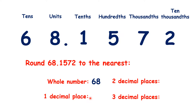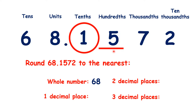Rounding to one decimal place is the same as rounding to the nearest tenth, because our tenths digit is always the first digit after the decimal point. If we look across to our hundredths column, we have a 5, so we need to round up. The 1 in our tenths becomes a 2, so we have 68.2, because when rounding to one decimal place, we'll always need only one digit after the decimal point.